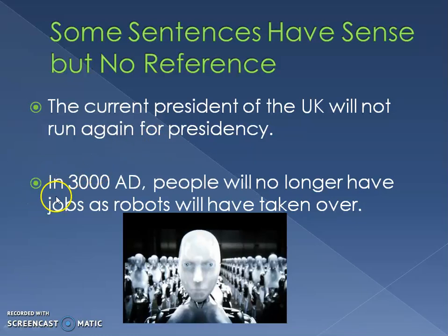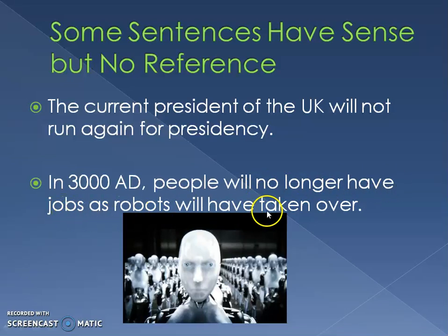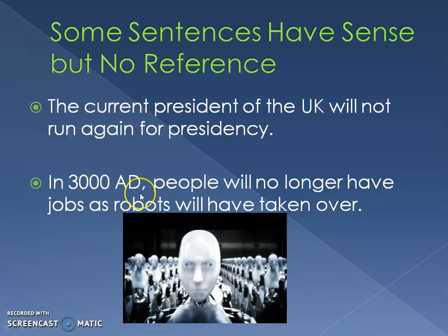A second example: 'In 3000 AD, people will no longer have jobs as robots will have taken over.' This is perhaps a scary — or good — situation, but it's not there yet. We don't know what will happen in 3000 AD, so we don't have any reference here.